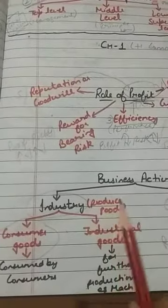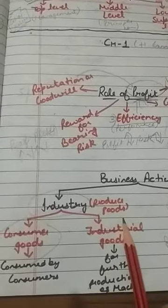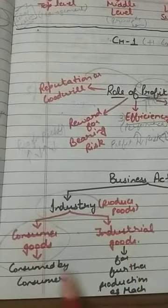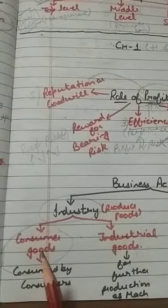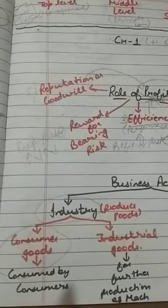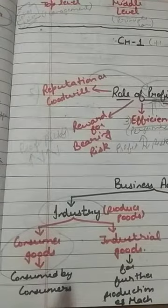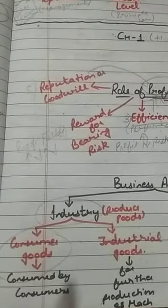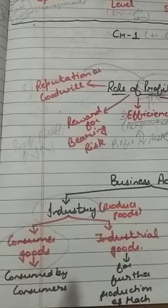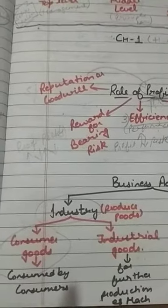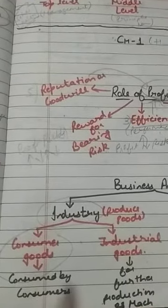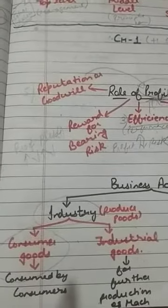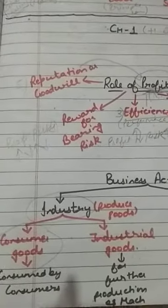Industry produces two types of goods: consumer goods and industrial goods. Consumer goods are those goods which are directly consumed by the consumer — goods which are meant for consumption purposes. For example, bread, butter, chapati — these are regarded as consumer goods.